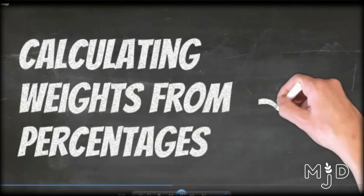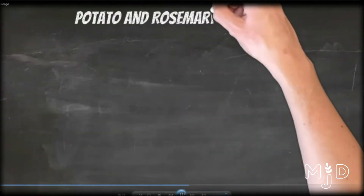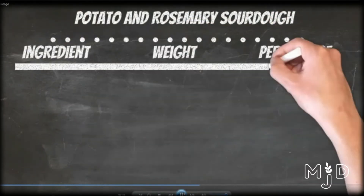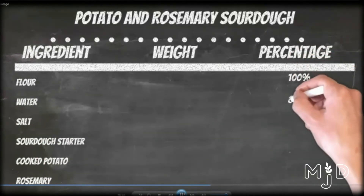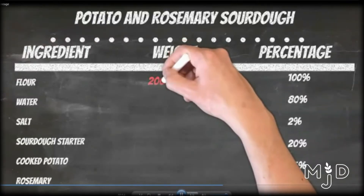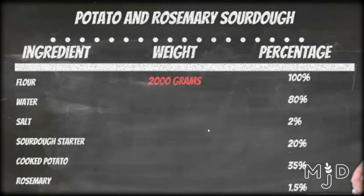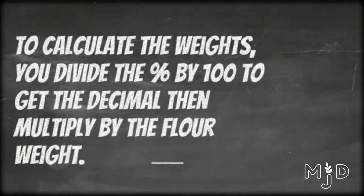Now let's look at how to calculate weights from percentages, using a recipe for potato and rosemary sourdough bread. The ingredients are flour, water, salt, sourdough starter, cooked potatoes, and rosemary. Flour is equal to 100%. Water is 80%, salt is 2%, sourdough starter is 20%, cooked potato is 35%, and rosemary is 1.5%. Given 2,000 grams of flour, how do we calculate the rest? We divide the percentage by 100 to get a decimal, then multiply it by the flour weight.